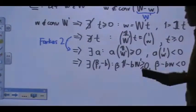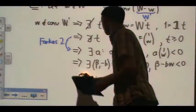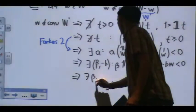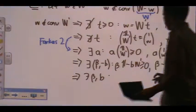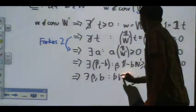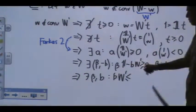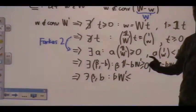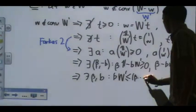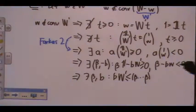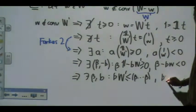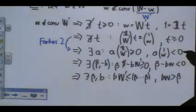Let's just rewrite. So what is this saying? It's saying that there exists a beta and a B such that B times W prime is definitely equal to beta times 1. But 1 is just the all-ones vector, so this is just a bunch of betas. And B·W is bigger than beta.